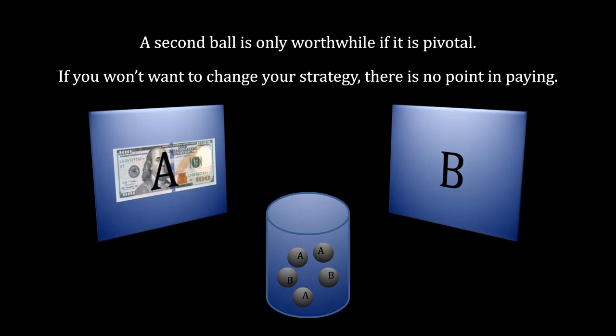What that means for this problem is that a second ball is only worthwhile if it is pivotal. If you would not want to change your strategy based off of what you see by that second ball, at least some portion of the time, then there is no point in paying for that new information. That is going to come at a direct cost for you, and it's not going to change what you would have done by just looking at a single ball by itself. It turns out here that no matter what the second ball says, you have no active incentive to change what you would have done had you only followed the first ball's advice. As a consequence, the actual value of that second ball is zero.